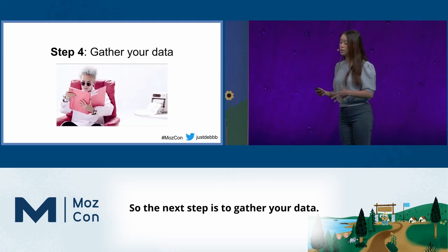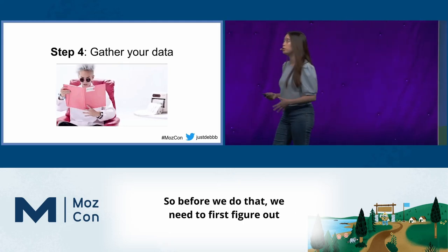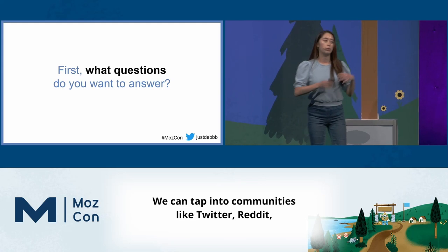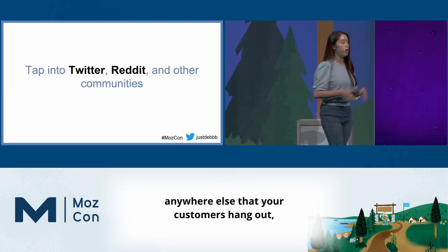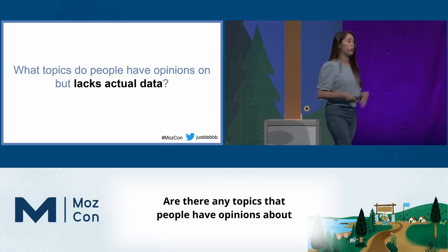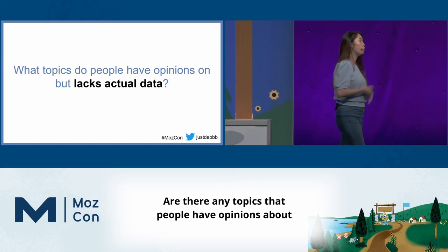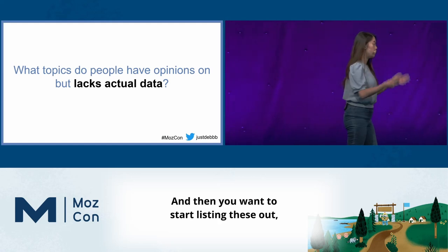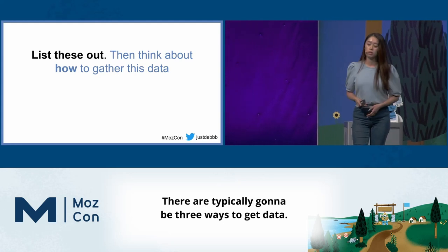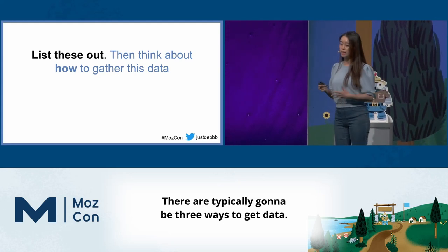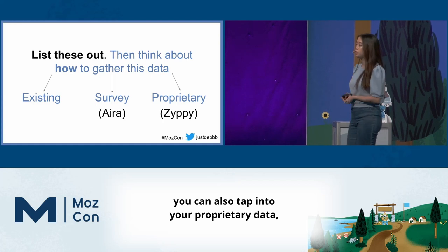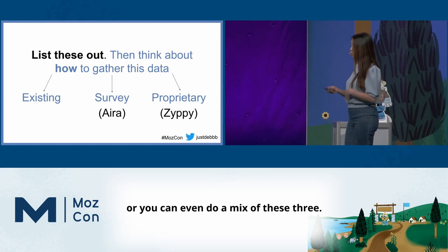Before we gather data, we need to first figure out what questions we want our research report to answer. We can tap into communities like Twitter, Reddit, anywhere else that your customers hang out, and take a look at what people are talking about there. Are there any topics that people have opinions about but lack actual data on? Then you want to start listing these out and think about how you gather these data points. There are typically going to be three ways to get data: using existing data sets, conducting a survey, or tapping into your proprietary data — or even a mix of these three.